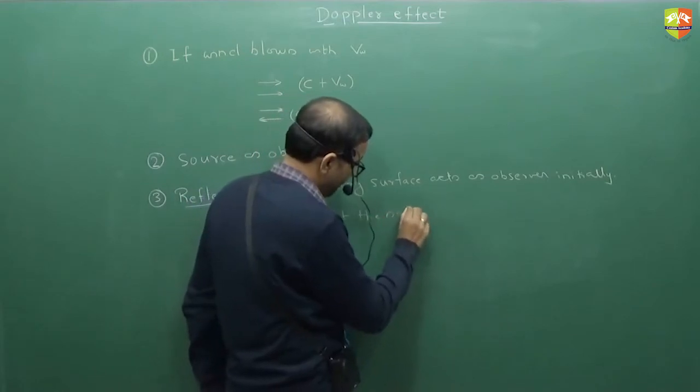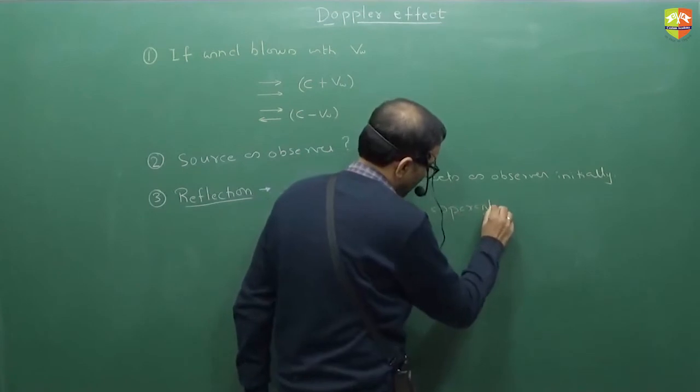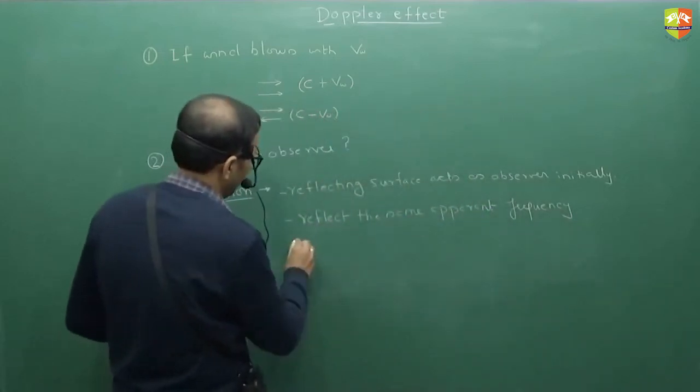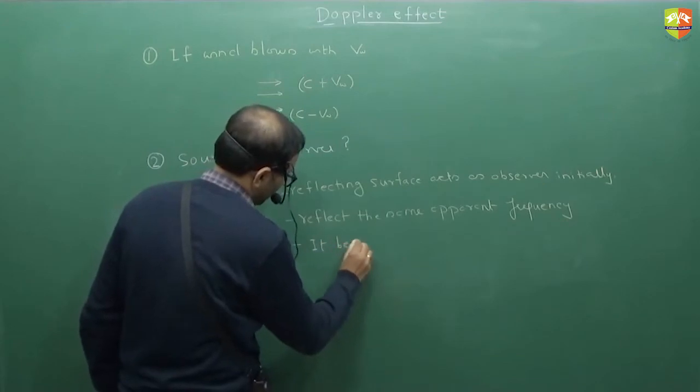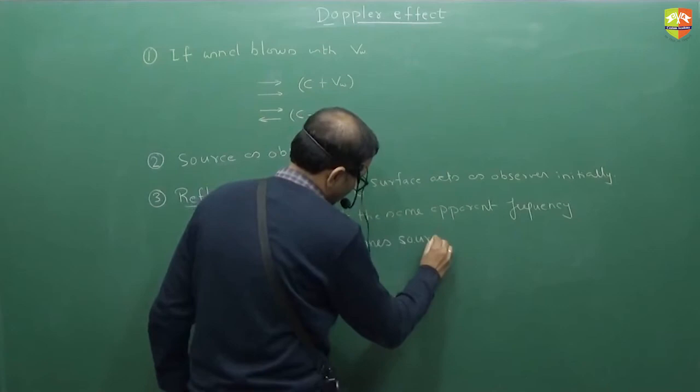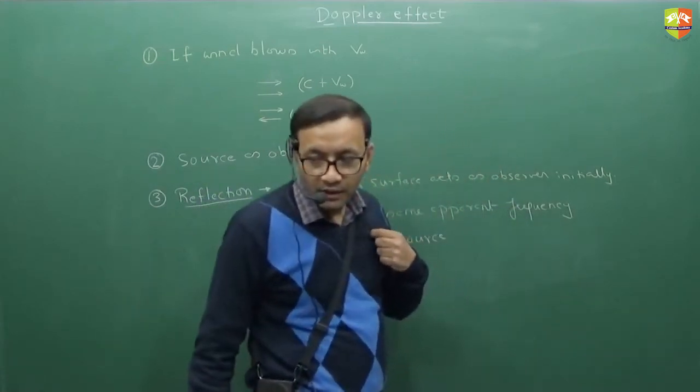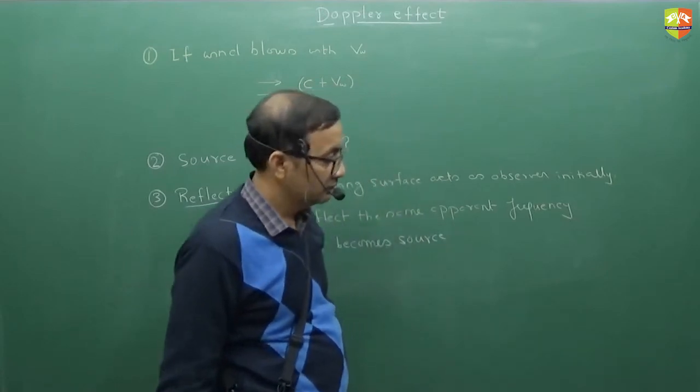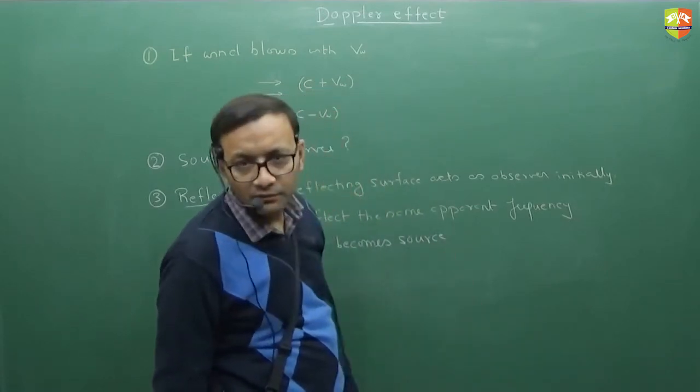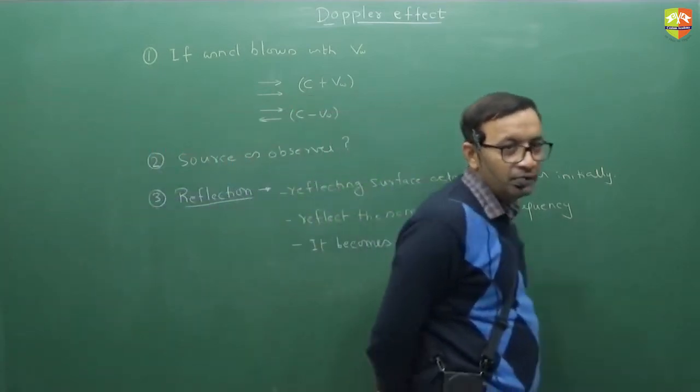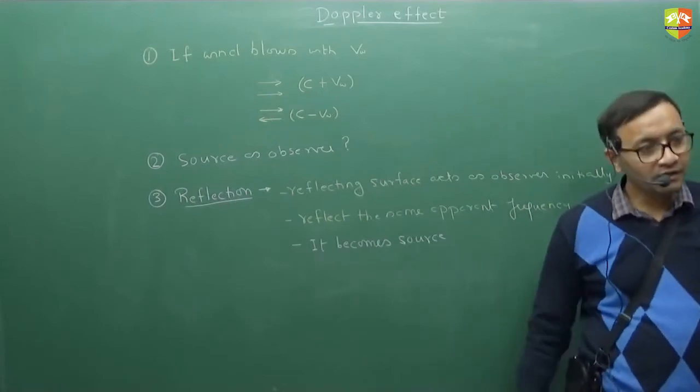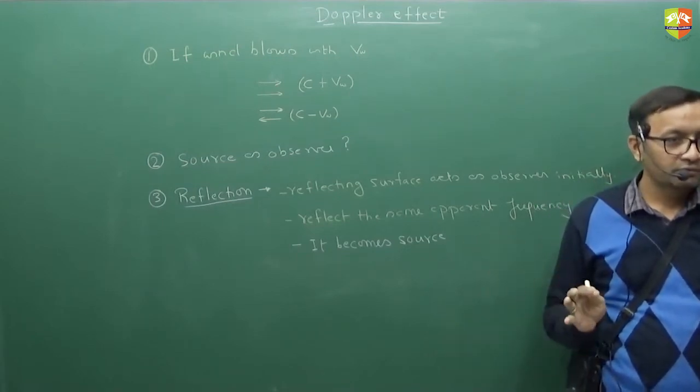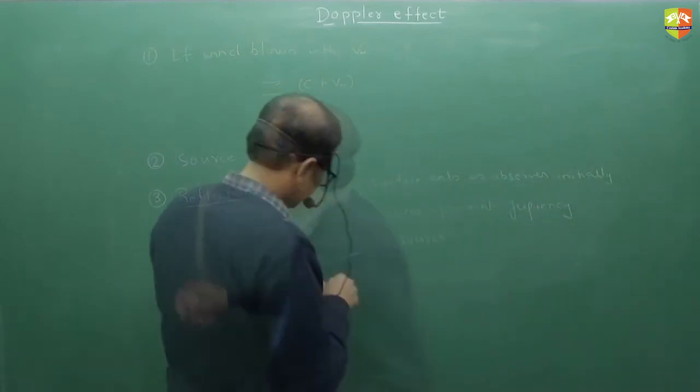That will become the source. Now it will become the source and you have to account for the velocity now also. Then now that will be velocity of source. It reflects the same apparent frequency. Then now it will become source. First observer could be the final observer. We will talk about that. We will take examples. I will put each and everything in that.